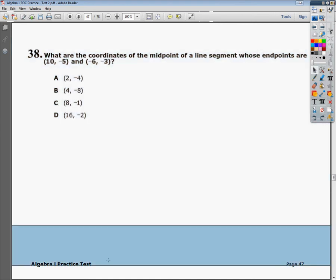All right, this is the Algebra 1 Practice Test 2, question number 38. What are the coordinates of the midpoint of a line segment whose endpoints are (10, -5) and (-6, -3)? Now the question asks you about the midpoint and they give you some coordinates. Midpoint has a formula, so we're actually just going to look at the formula and then write it down.